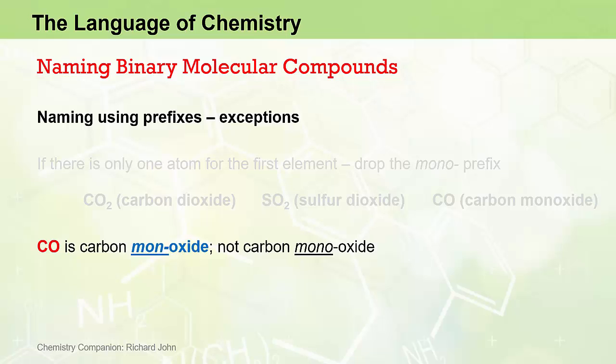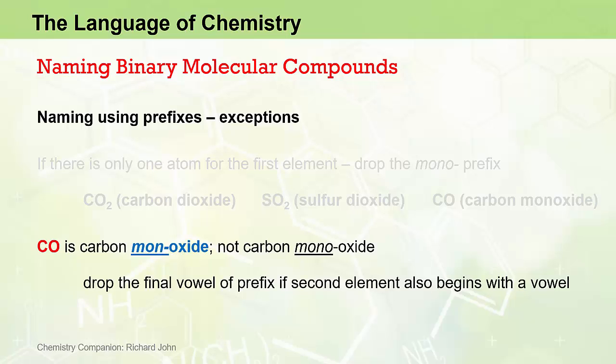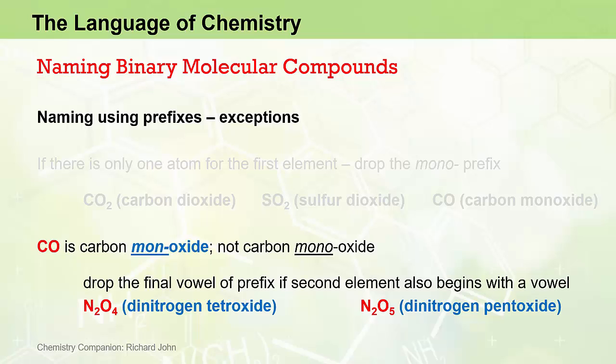Another exception: we drop the vowel of the prefix if the element name also begins with a vowel, for ease of pronunciation. So CO is carbon monoxide, not carbon monooxide, because "oxide" begins with a vowel. Similarly, N2O4 is dinitrogen tetroxide (not tetraoxide), and N2O5 is dinitrogen pentoxide (not pentaoxide).